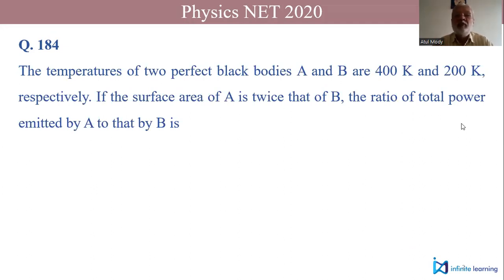The temperatures of two perfectly black bodies A and B are 400 and 200 Kelvin respectively. The surface area of A is twice that of B. The ratio of total power emitted by A to that by B is given by: